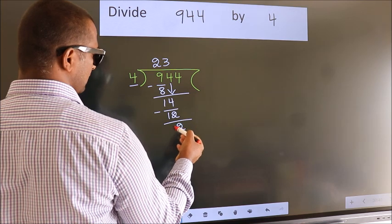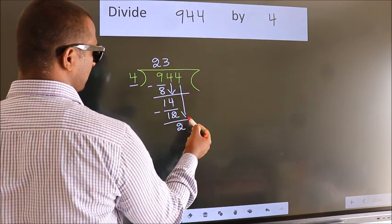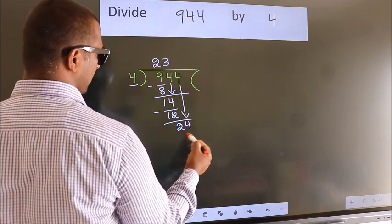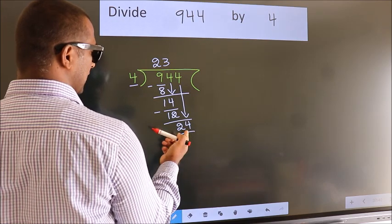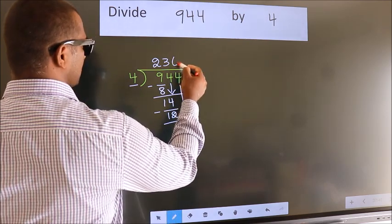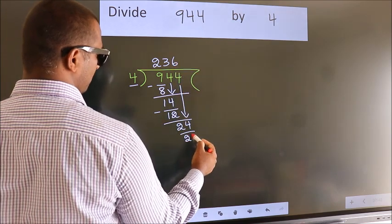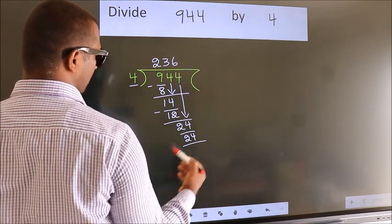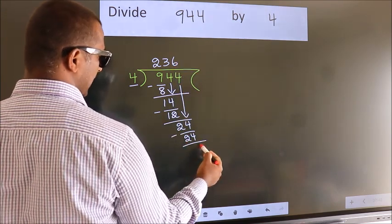After this, bring down the beside number. So, 4 down. So, 24. When do we get 24? In the 4 table, 4 times 6 is 24. Now we subtract. We get 0.